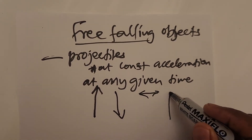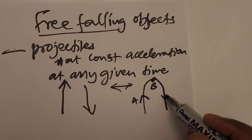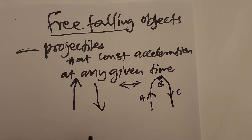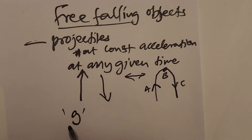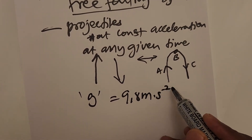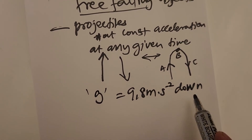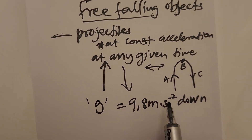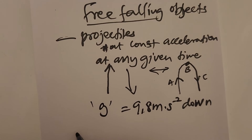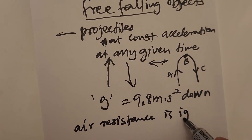At any given point — point A, point B, or point C — the projectile will have the same acceleration g, called gravitational acceleration, which is equivalent to 9.8 meters per second squared downwards. We say the projectile is falling freely, and this is only achieved when air resistance is ignored.